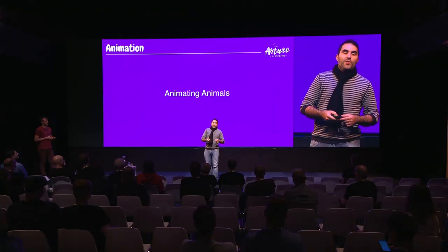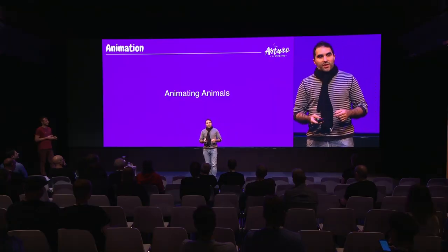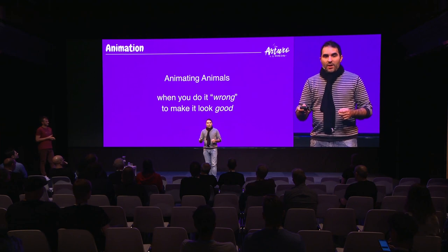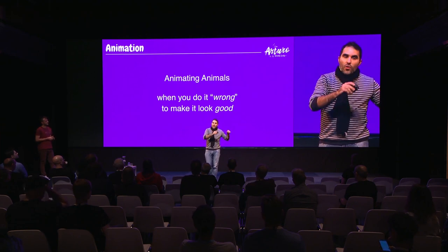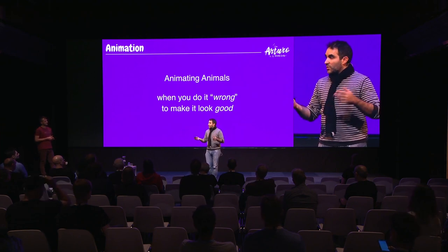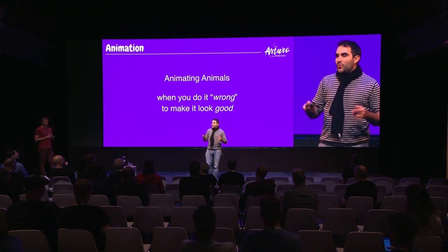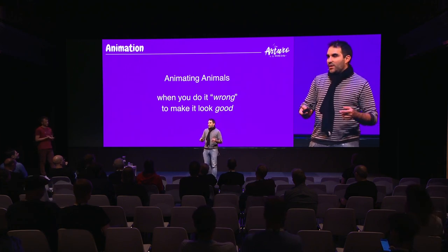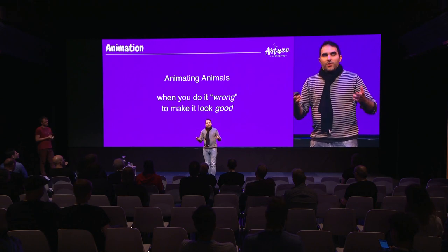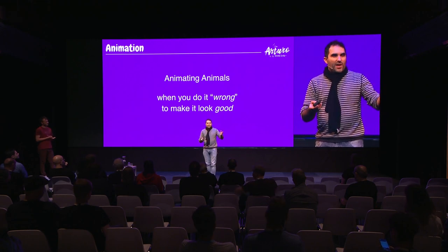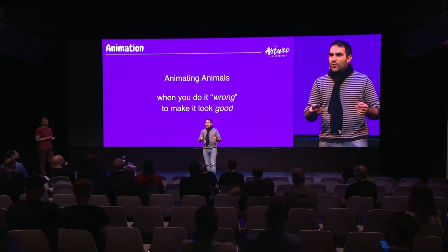Then I had to animate la gaviota, the seagull. One of the things I'm learning as an animation mentor is that when you animate an animal, you have to animate it in the wrong way to make it look good, because many animals have a very weird way to move and walk. If you do it realistically, for the audience it's going to look awful and fake. So you have to do it in a kind of wrong way to make it look natural.